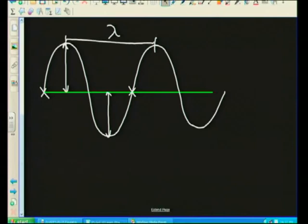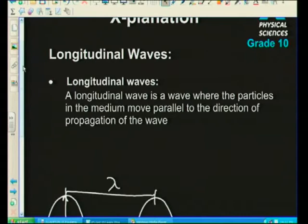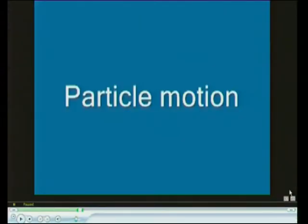A longitudinal wave is a wave where the particles in the medium — sound, water, whatever — move parallel to the direction of motion. The particles actually go backwards and forwards, while the pulse moves along the slinky in one direction. We're going to look at an animation to show this more clearly, with a yellow dot representing one part of the slinky.